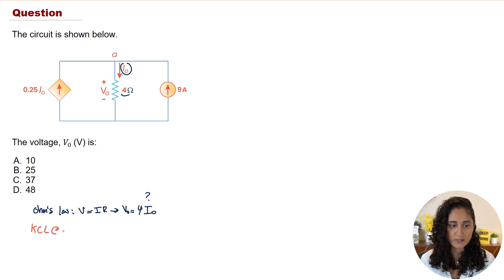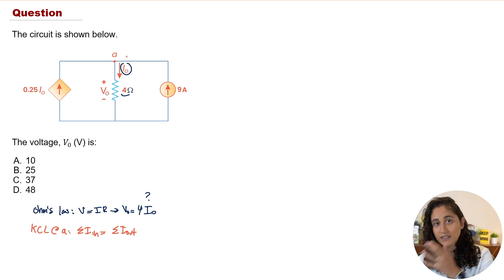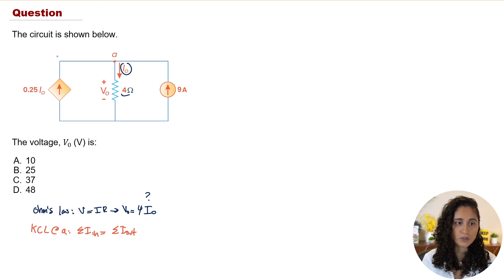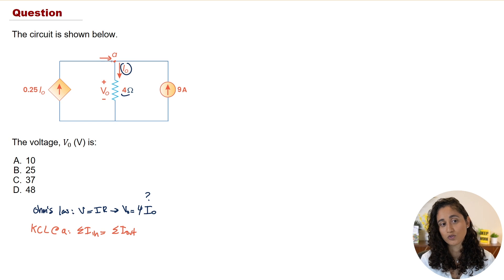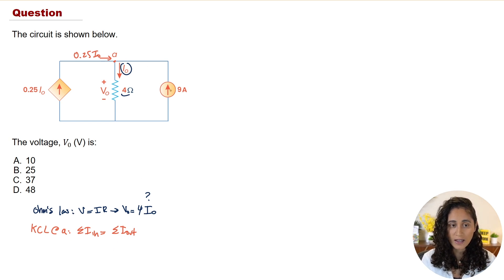Now let's write the KCL equation at node A. KCL states that the sum of currents in equals the sum of currents out. We look at node A and identify which currents are entering and which are leaving. We have 0.25·i_naught entering node A, and 9 amps also entering node A. Meanwhile, i_naught is leaving node A.